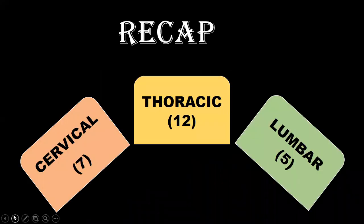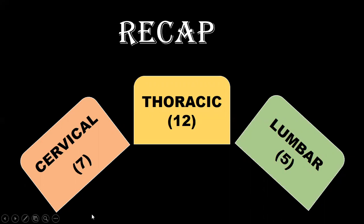If we recap whatever we have learned in our previous lecture, we know that the vertebral column is divided into five parts: cervical, thoracic, lumbar, sacral, and coccyx. The total number of cervical vertebrae is 7, thoracic is 12, lumbar is 5, and today we are going to focus just on cervical vertebrae, which has a total of 7.